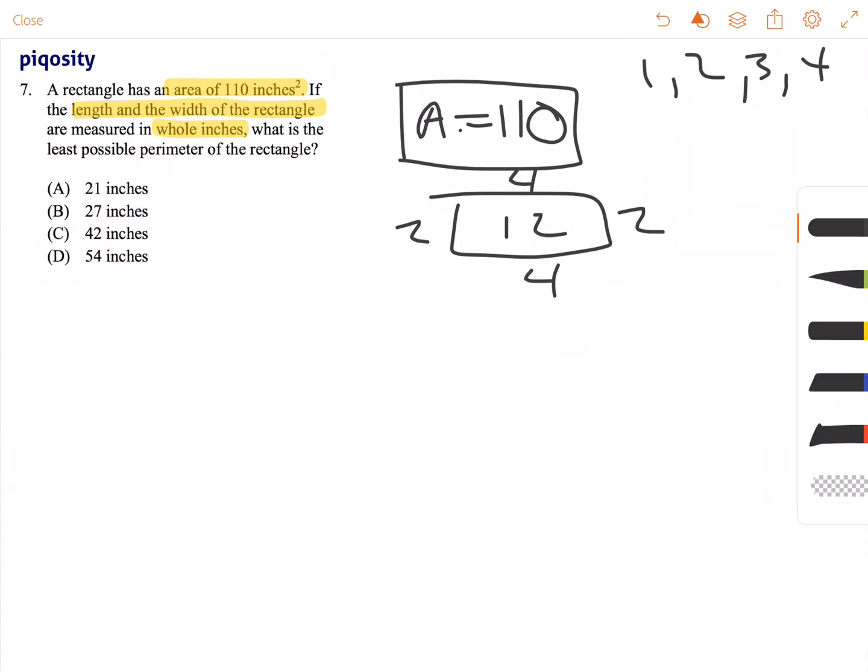All cases of these rectangles, the perimeter is going to be an even number. So what that does for us is it knocks out these two odd number answer choices, 21 inches and 27 inches. We don't even have to worry about them. So we're just left with 42 inches and 54 inches.